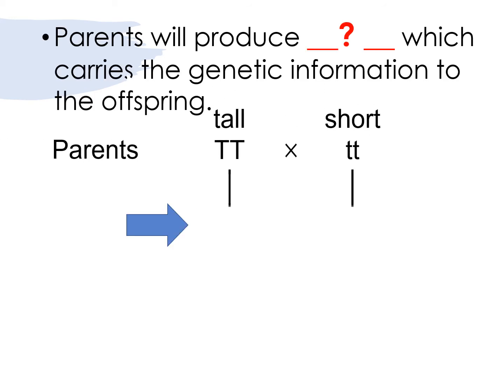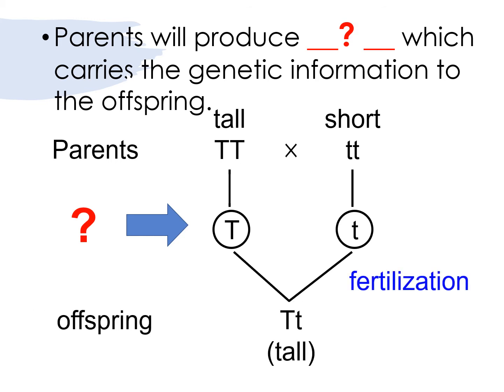Showed in here, you have a genetic diagram to show the reproduction of tall and short plants to give the offspring. Now the parent, the tall plant and the short plant, both of them is going to produce something to carry the genetic information to the offspring. What is that? It should be the gamete.